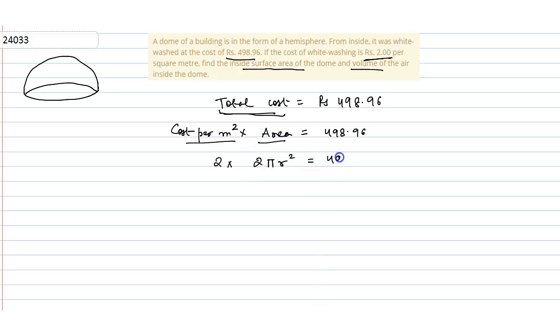So which is equal to 498.96. So what is the value of r²? Which is 498.96 by 4π. And the value of r, we will find the square root of 40, so we will solve it in the prime factorization method.